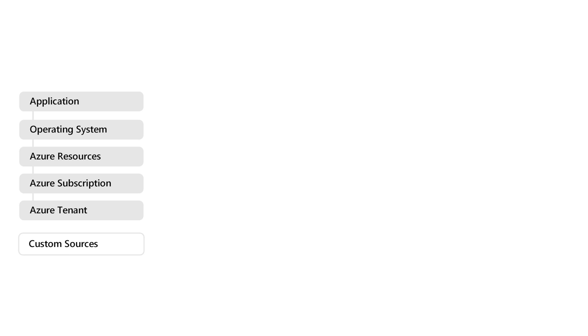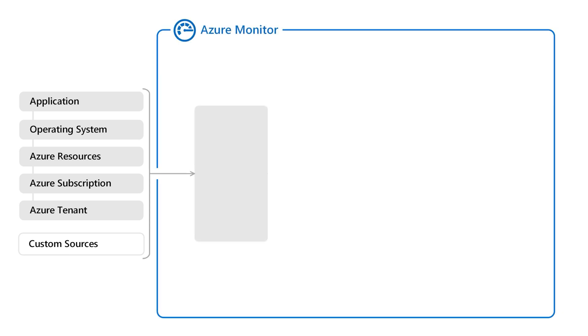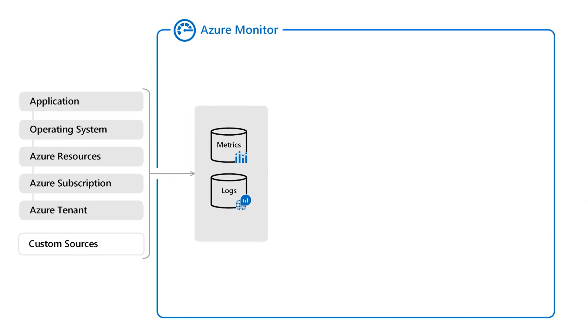From there, it populates two types of data stores. The first is the metrics database, which holds numerical values that describe some aspect of a system at a particular point in time. They're lightweight and capable of supporting near real-time scenarios. The second is the logs data store, which is organized into records with different sets of properties for each type. Telemetry, such as events and traces, are stored as logs in addition to performance data so that it can be combined for analysis.